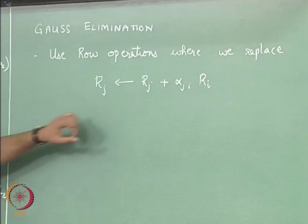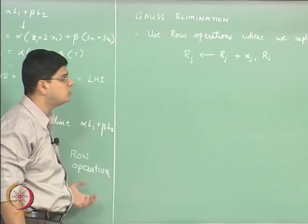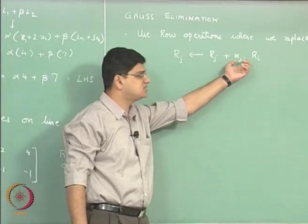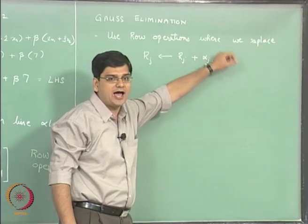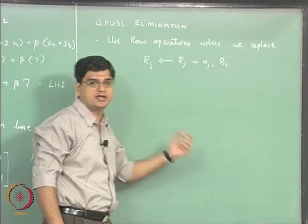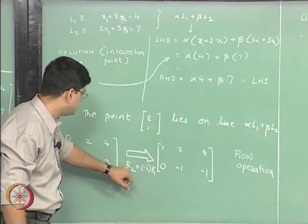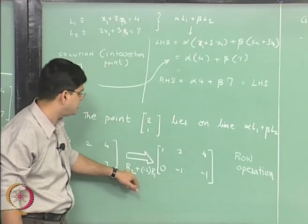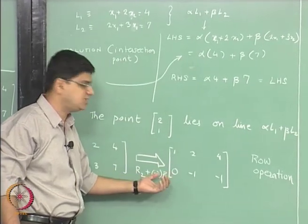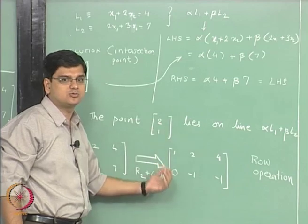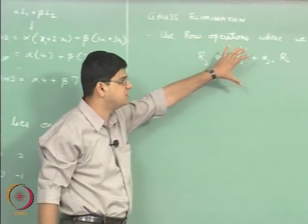In general, what we are going to do is we will take the jth row, in this particular case the second row, and add to it some coefficient alpha multiplied by the ith row - the ith row in this particular case was first row. So specifically what we did over here is we did R2 plus minus 2 multiplied by R1, where j is equal to 2 and i equal to 1.